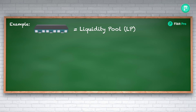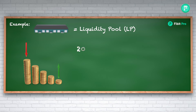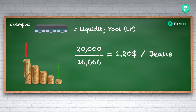The godown is actually a liquidity pool. It's a simple demand and supply situation — the more there is, the less it costs, and the less there is, the more it costs. Currently the cost of jeans is 20,000 divided by 16,666, which equals $1.20 per pair of jeans, and they are getting more expensive because there is less liquidity available.